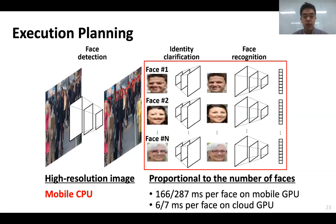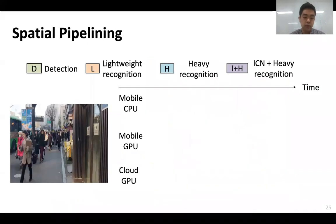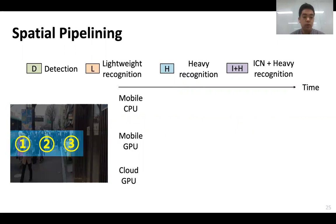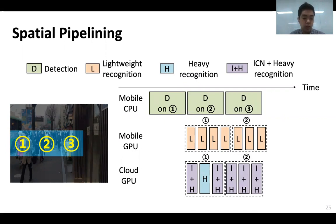The ICN plus recognition stage latency is proportional to the number of faces. Running heavy ICN and ArcFace on mobile GPU incurs about 500 milliseconds per face, whereas it can be done in less than 15 milliseconds on cloud GPU. So we offload them to the cloud and run only the lightweight MobileFaceNet on local GPU. Offloading only the small faces is also beneficial since the data size that needs to be sent to the cloud is very small. Based on this DNN-processor mapping, we utilize the spatial independence of the task and parallelize execution on mobile and cloud. After edge-based background filtering, we process remaining regions in blocks: we detect faces in block one and recognize those faces while detecting faces in block two, continuing until all regions are processed.